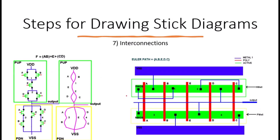Finally, it's time to interconnect the devices — this is the most crucial part because it defines how your sources and drains are connected. For both pMOS and nMOS, use polysilicon to connect the gates and metal one to connect the source and drain regions. Avoid long side-by-side routing as it can add unnecessary capacitance. The goal is to keep routing as simple as possible.